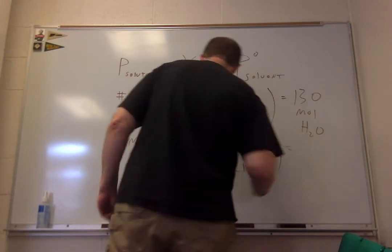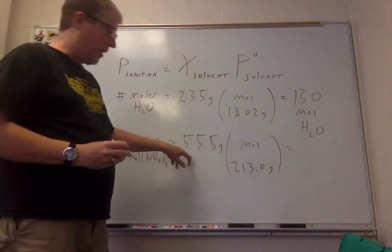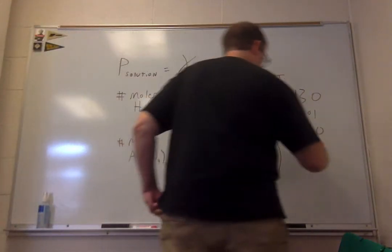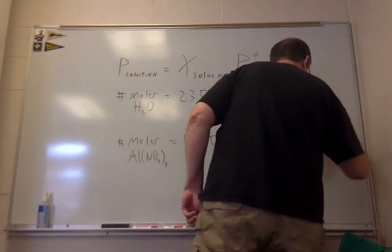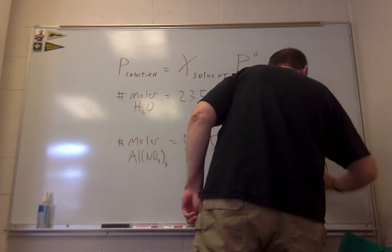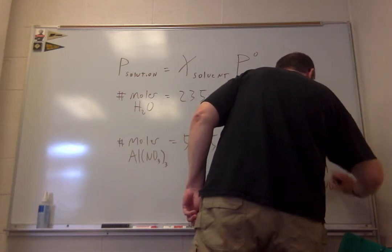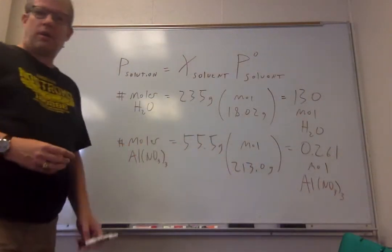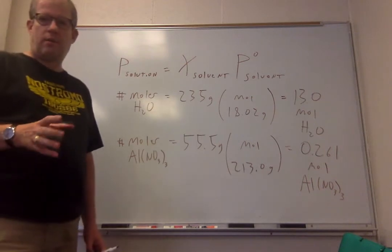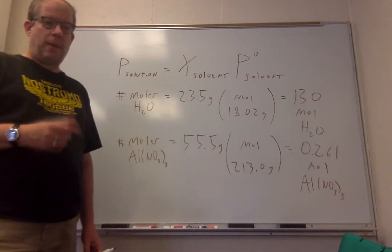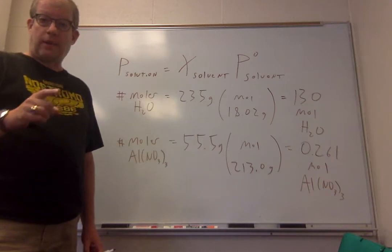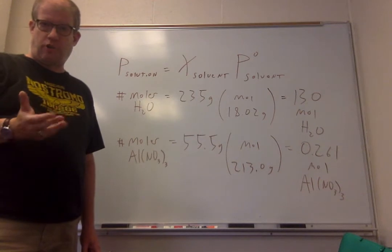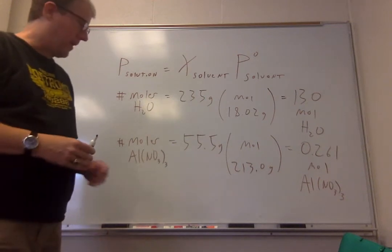And that is obtained simply from the amount that we have, the given molar mass, and that's 0.261 moles of aluminum nitrate. Now, here's the key to this. This is the situation where we have a non-volatile electrolyte that's dissolved in the water, not a non-electrolyte like sugar, but an electrolyte.